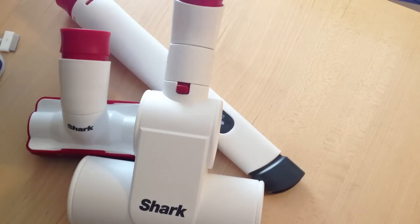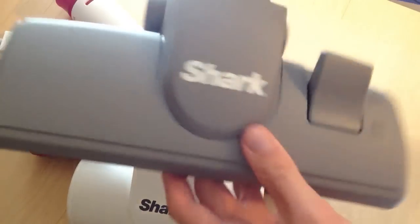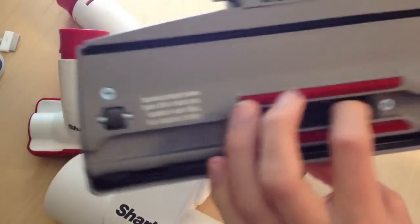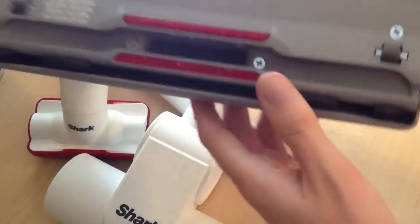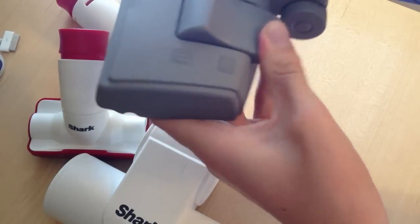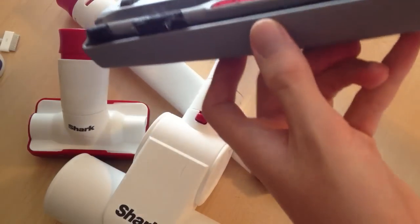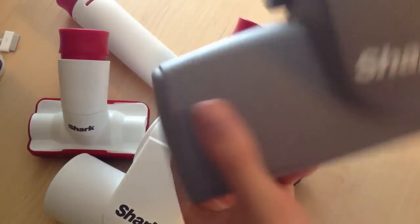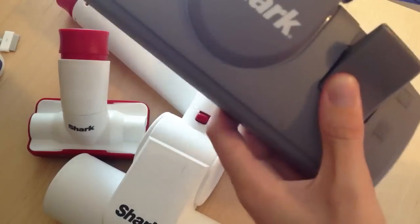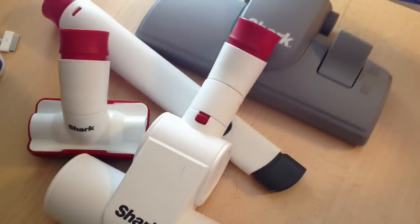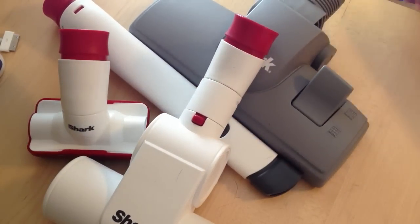And then the last really big attachment is the hard floor tool. Now, it has a brush strip that you can engage by pressing the foot pedal. There you go. Brush strip comes up. This is designed so that you can use the machine in canister mode, with it following you around on the caddy.